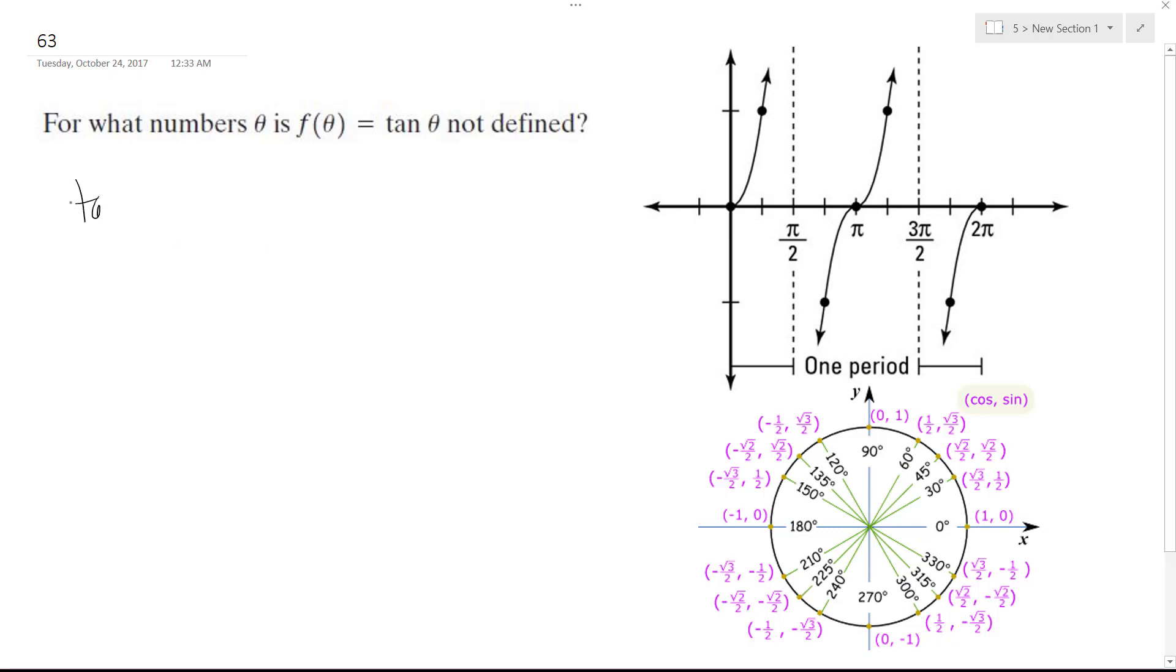The tangent of theta is equal to sine over cosine, and it cancels out, the r's cancel out so you're left with y over x.